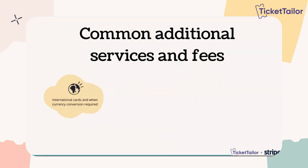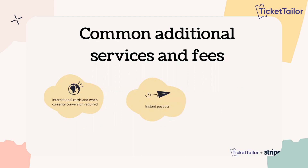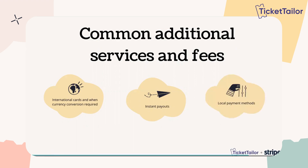There are a few things that might result in additional fees. One is if your ticket buyers are using an international card and require currency conversion for the funds to end up in your bank account. Also, Stripe offers instant payout — if you need your ticket revenue in your bank account quicker, there are additional costs for taking that money out faster than their usual payout cycle. And local payment methods like iDEAL and Bancontact have different fees, quite often less than credit or debit card. All these fees can be seen on the Stripe website — just Google 'Stripe pricing' and it will show you the prices for your local area.